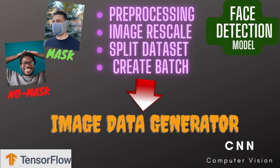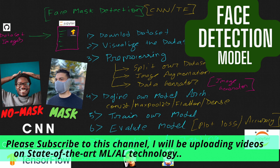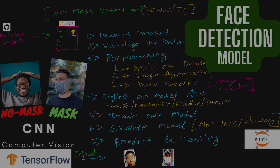Hi everyone, welcome back. This is going to be the fourth video of our face mask detection tutorial series. Please watch my previous videos if you haven't watched yet. So far we have covered how to download an image dataset from Git, how to unzip those datasets, how to create a visualize function to visualize random images through Python code, how to split the dataset, image augmentation including de-scaling, and how to use Image Data Generator for various purposes. In this video, we are going to create our own model architecture from scratch.